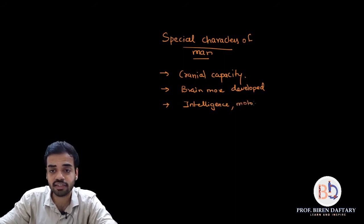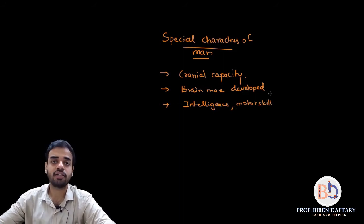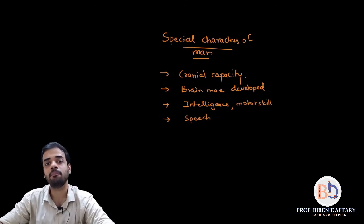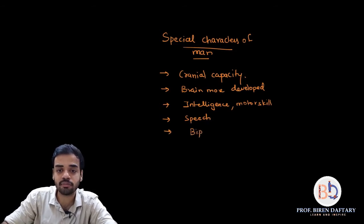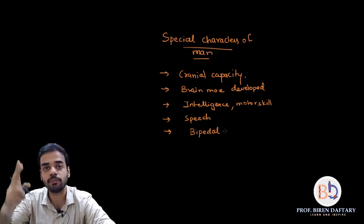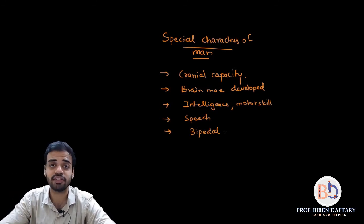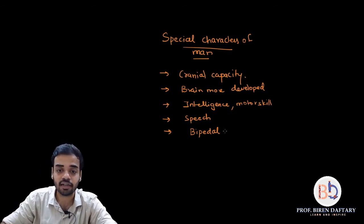Other special characters of man compared to apes include better motor skills, running, and language/speech formation. Physically, human beings are bipedal — we use only two hind limbs for walking — whereas apes are quadrupedal, using all four limbs. In humans, forelimbs are shorter and hind limbs are longer; in apes it is the opposite.